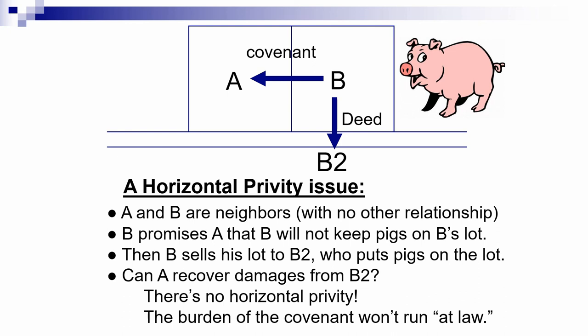So the burden of the covenant won't run with the burdened land in an action at law. If B2 puts pigs on the property and A sues B2 for damages, A's suit will fail because of the lack of horizontal privity. Importantly, horizontal privity isn't necessary to make the benefit run with the benefited land. If A had transferred the land, the new owner of A's land could enforce the covenant against B — because horizontal privity is required only for the burden to run, not for the benefit.